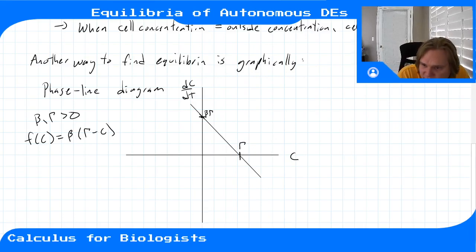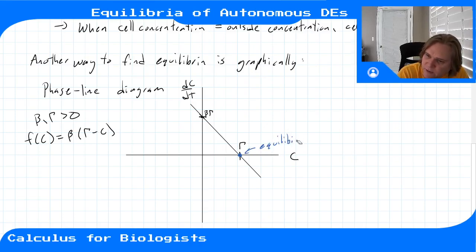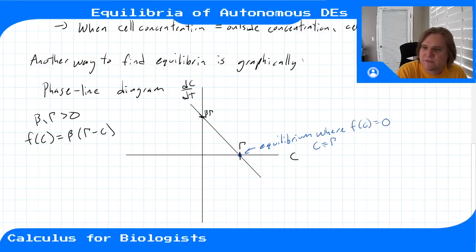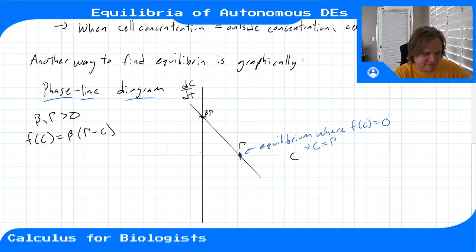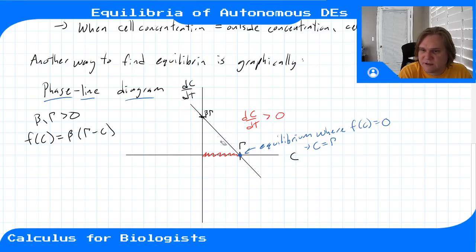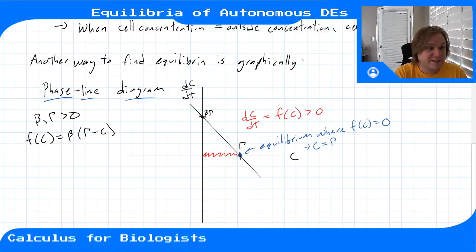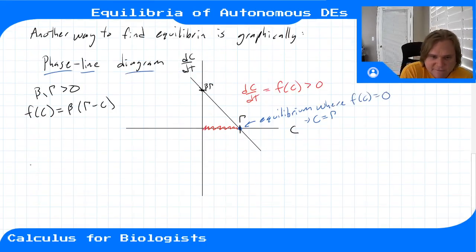Based on this graph, there is an equilibrium point where c equals γ — that is, where f(c) equals zero. The extra information we get from the phase line diagram is what dc/dt looks like to the left and right of equilibrium. To the left, dc/dt — which is f(c) — is positive for c less than the equilibrium point.